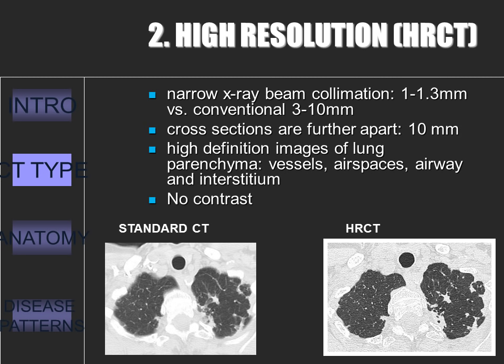In high resolution CT, transverse images of thin slices of lung between 1 to 1.3 millimeters thick are obtained at non-contiguous intervals, usually 1 to 2 centimeters apart throughout the whole lung. The computer then reconstructs the images to give high spatial resolution, resulting in images that show fine detail. However, only 5 to 10 percent of the lung is sampled, so focal lesions may require more images.